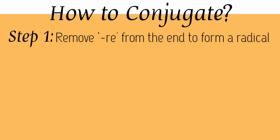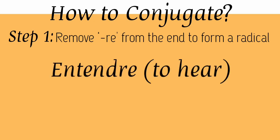In step one, we will remove -re from the end of the verb and the remaining will be the radical. Let's understand this simultaneously with an example. Let's consider the verb 'entendre'. Entendre means 'to hear'. So when we remove -re from entendre, the remaining 'entend' is the radical.